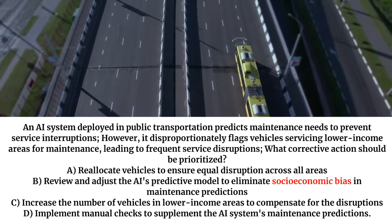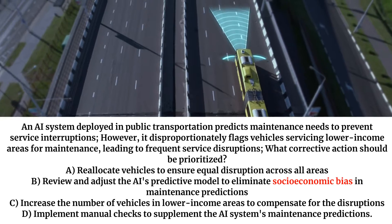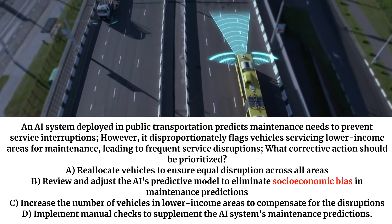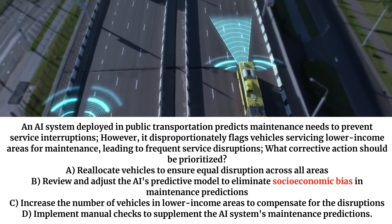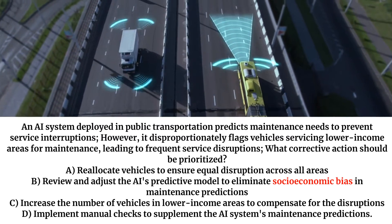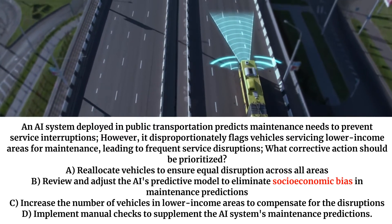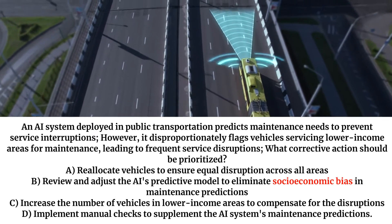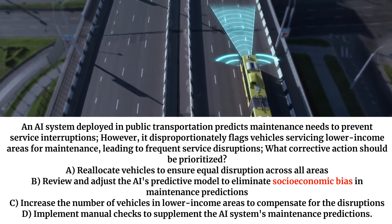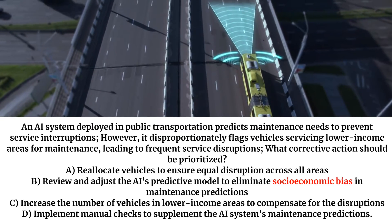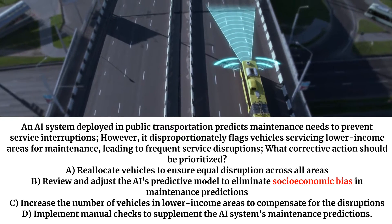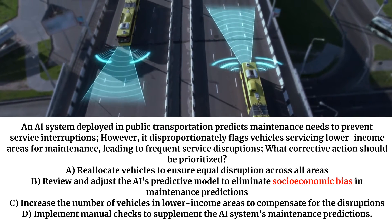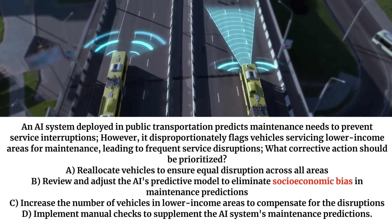An AI system deployed in public transportation predicts maintenance needs to prevent service interruptions. However, it disproportionately flags vehicles servicing lower-income areas for maintenance, leading to frequent service disruptions. What corrective action should be prioritized?